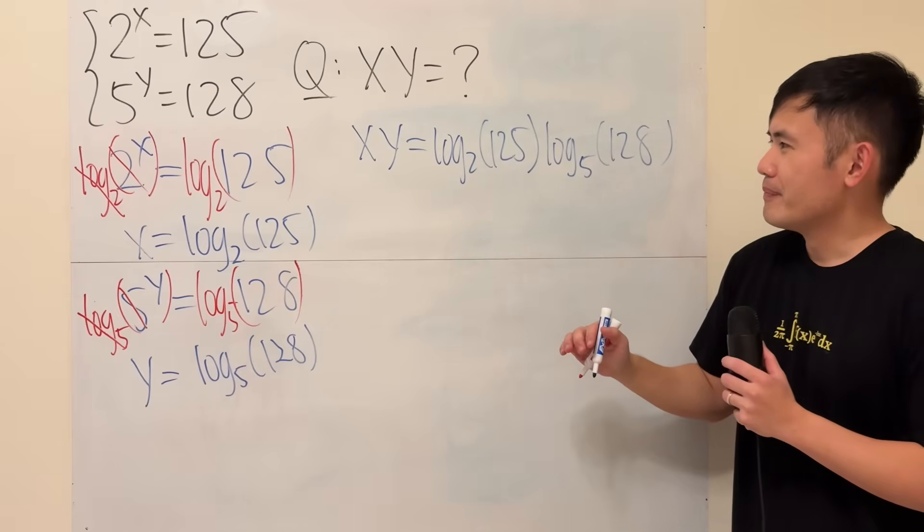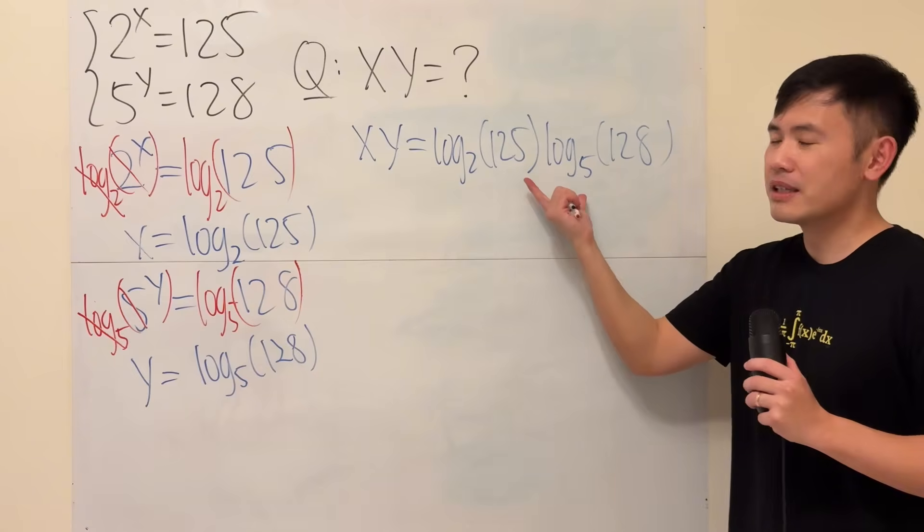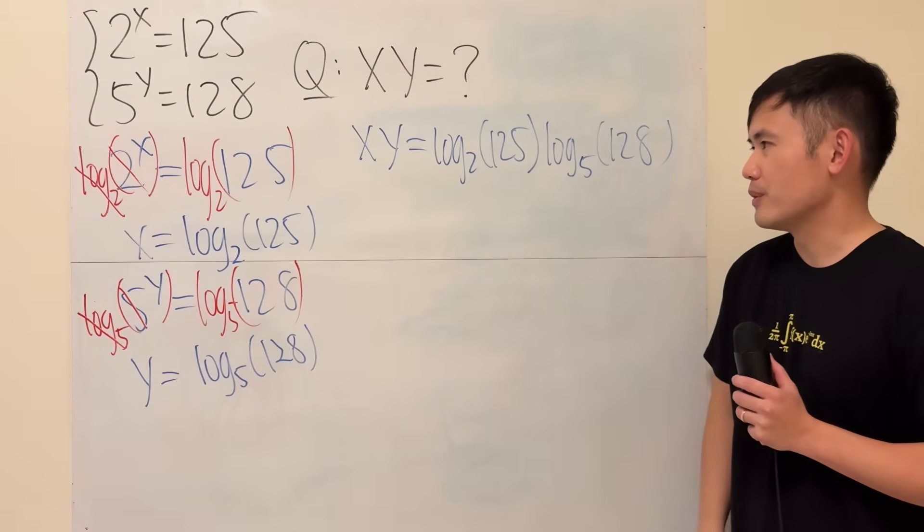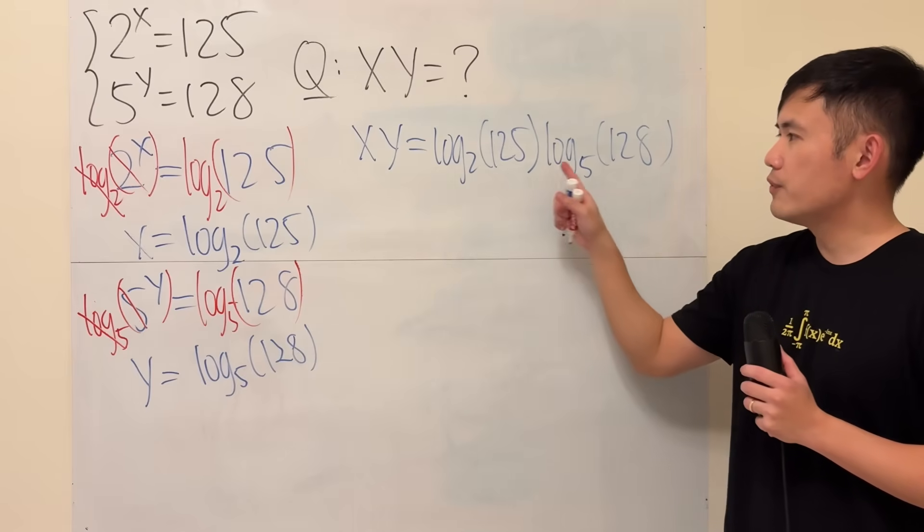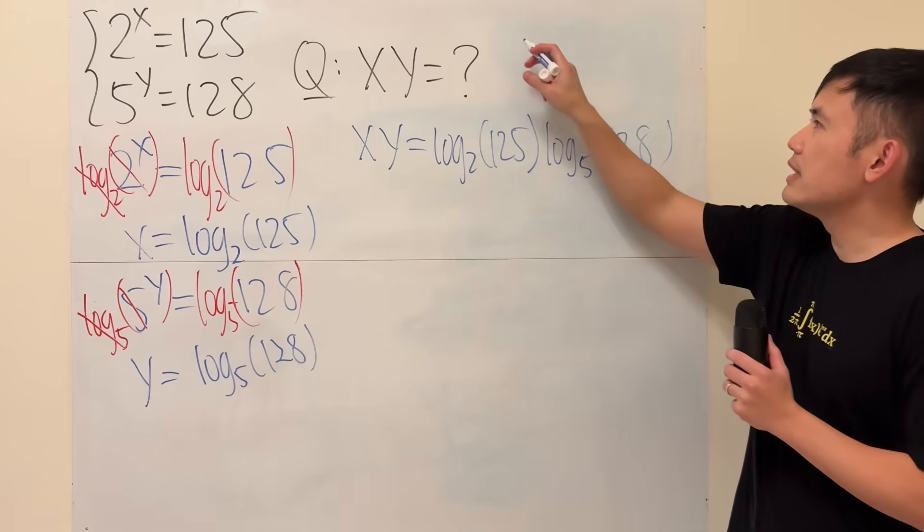Anyways, we're done. Well, kind of, but not really, because we should really simplify this expression. The result is a nice number, so let's see how we can do that. Firstly, they have different bases for the log. We do have a change of base formula, which says the following.